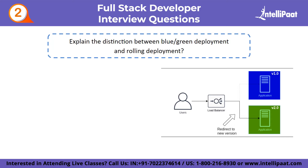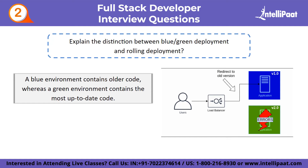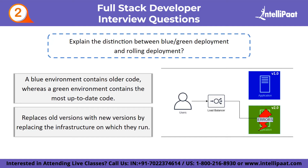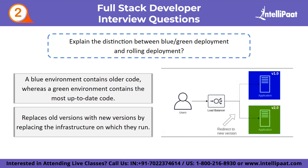Second intermediate question: explain the distinction between blue-green deployment and rolling deployment. Blue-green deployment creates two distinct infrastructure environments — blue and green. A blue environment contains older code, whereas a green environment contains the most up-to-date code. At any given time, there is only one live production environment. In rolling deployment, this strategy completely replaces old versions of an application with new versions by replacing the infrastructure on which they run.